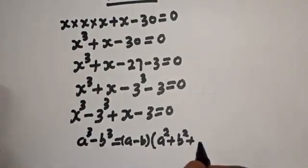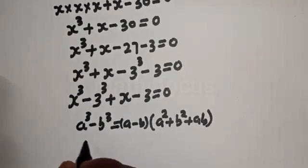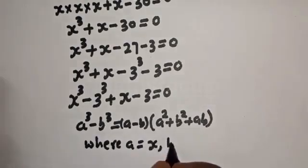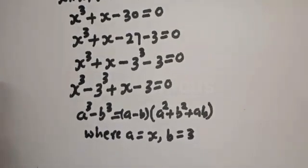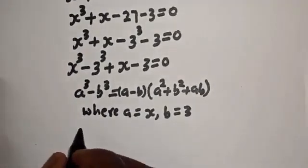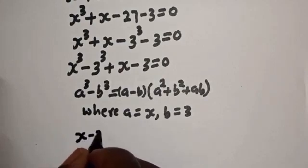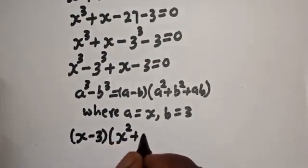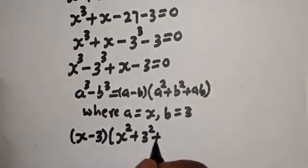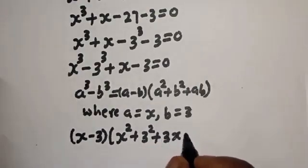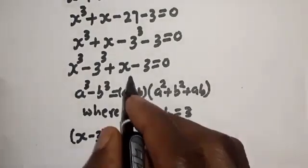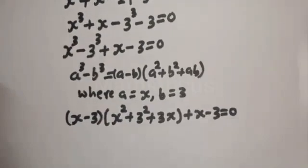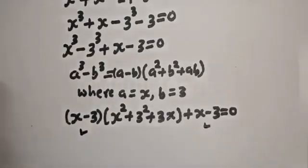Using that factoring rule where a cubed minus b cubed equals (a minus b)(a squared plus b squared plus ab), with a equal to s and b equal to 3, we factor s cubed minus 27 as (s minus 3)(s squared plus 3 squared plus 3s), then plus the remaining term (s minus 3).